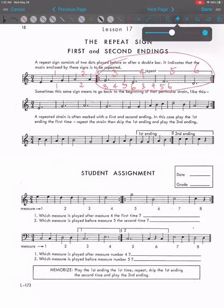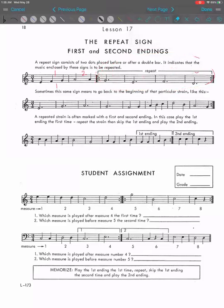Then sometimes the same sign means to go back to the beginning. So if you don't see any other repeat signs happening in the middle of the piece, that means this repeat sign has to go all the way back to the beginning. So it will be 1, 2, 3, 4, 5, 6, 7. And you're going to repeat, basically...